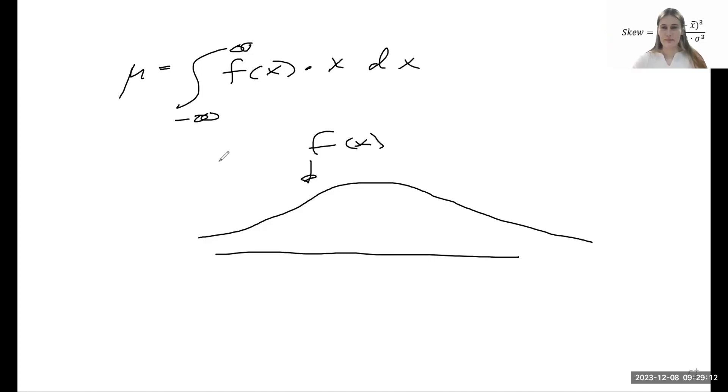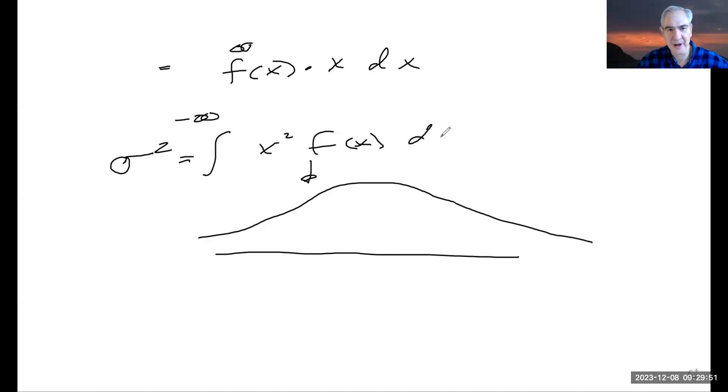And I think that the variance basically takes the square of that. When we want to figure out what the variance is, we integrate f of x times the x squared bit, and integrate with respect to x. That's used to figure out what the variance is.